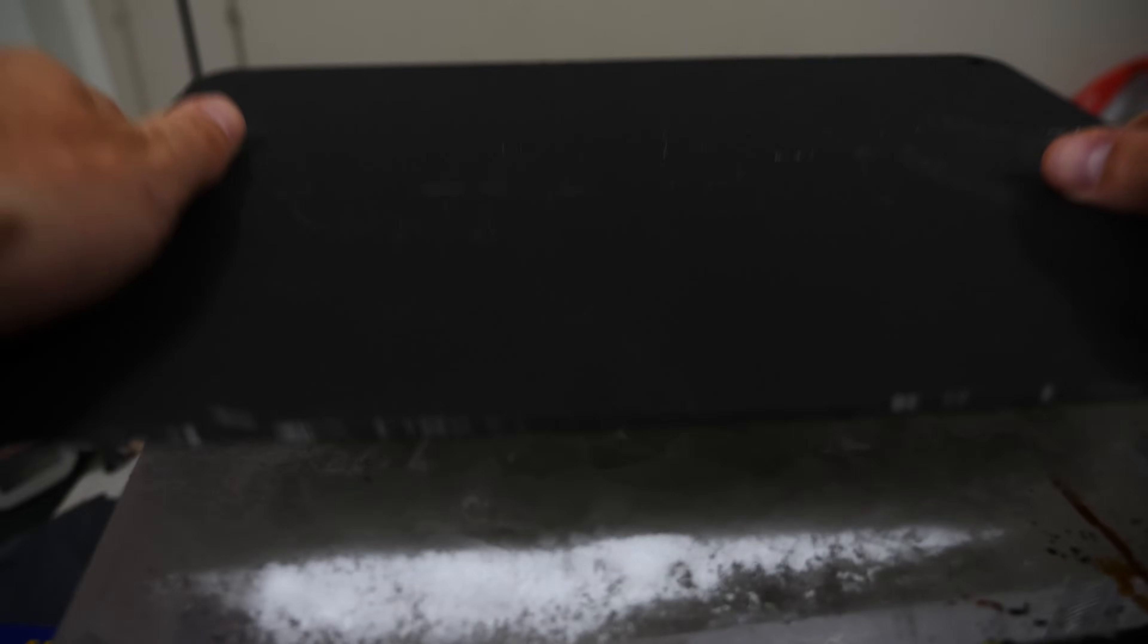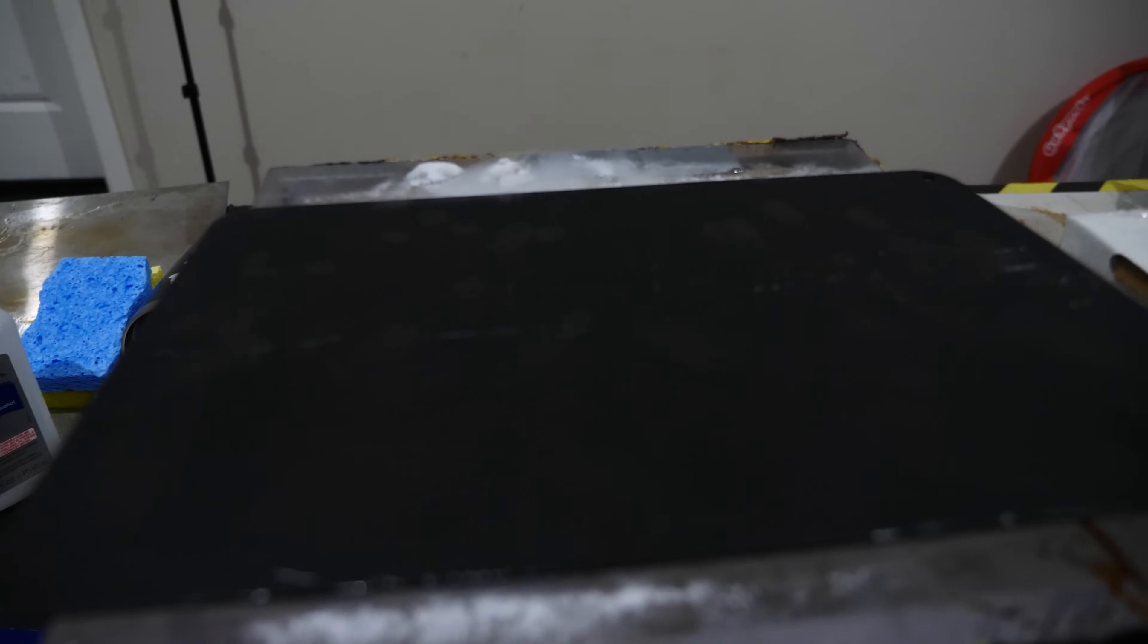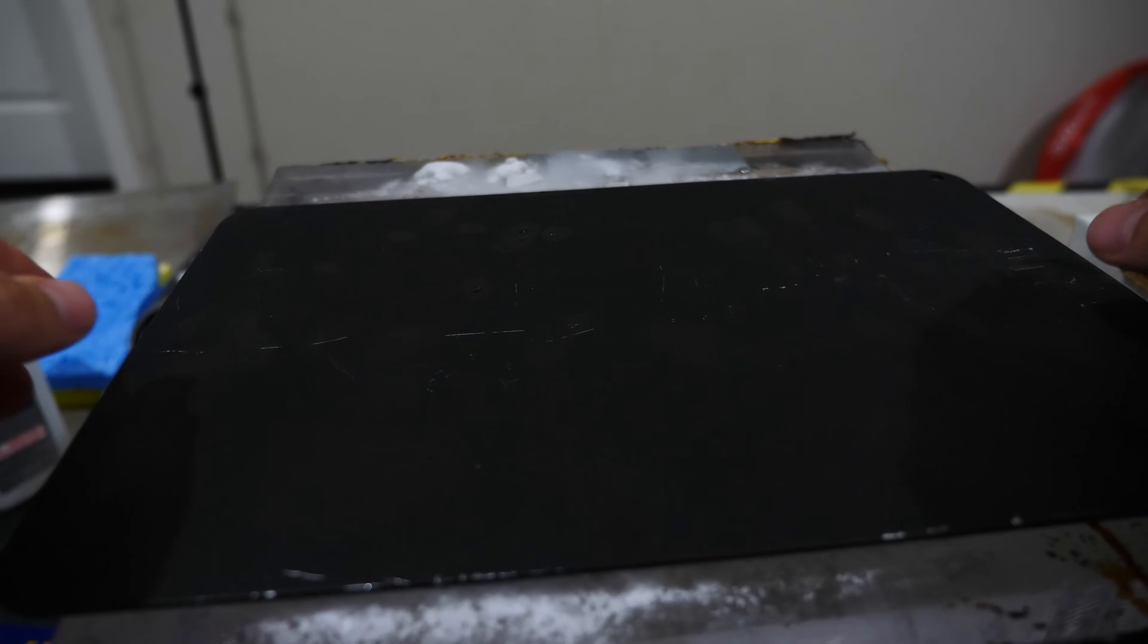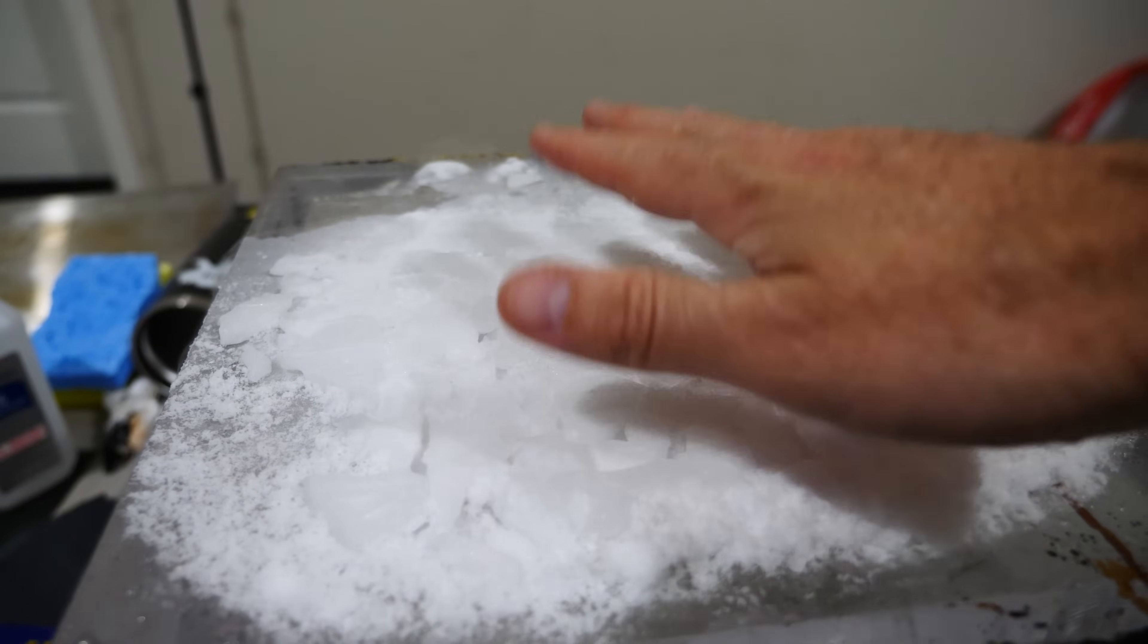So as you know there's ionizing radiation all around us. It's continually whizzing past the air. In order to detect these particles we have to make a cloud chamber. Now this may sound a little bit difficult to do but it's actually not. It's really easy.